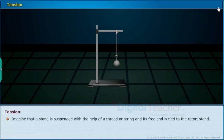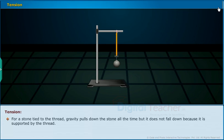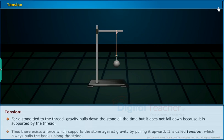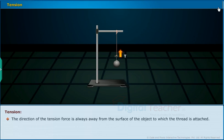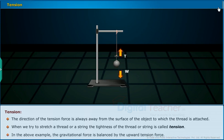Imagine that a stone is suspended with the help of a thread or string, and its free end is tied to a retort stand. The stone would fall down due to gravitational pull if the string were broken. Gravity pulls down the stone all the time, but it does not fall down because it is supported by the thread. There exists a force which supports the stone against gravity by pulling it upward — it is called tension, which always pulls the bodies along the string. The direction of the tension force is always away from the surface of the object to which the thread is attached. In this example, the gravitational force is balanced by the upward tension force.